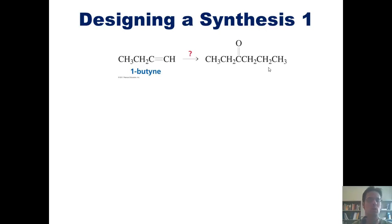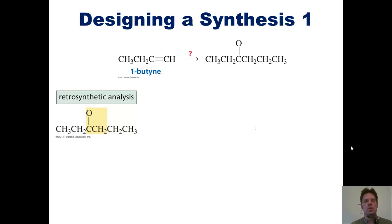That method is called retrosynthetic analysis. The term was coined by a professor from Harvard named E.J. Corey, who received the Nobel Prize in Chemistry back in 1990 for his writings and work on the subject. The way retrosynthetic analysis works is this: you write down your product and then you work your way backwards one step at a time, getting simpler as you move along until you get back to your starting material.